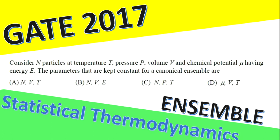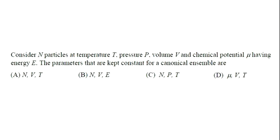Let us look at a question asked on GATE 2017 statistical thermodynamics, which is based on N symbols. The question is: consider N particles at temperature T, pressure P, volume V, and chemical potential mu having energy E. The parameters that are kept constant for the canonical ensemble are given as options: NVT, NVE, NPT, and mu-VT. The answer for the canonical ensemble is NVT — N, V, and T are kept constant.